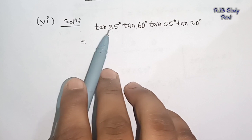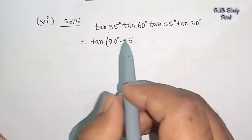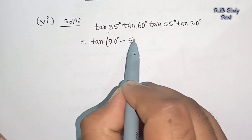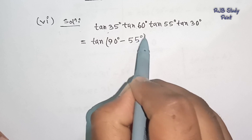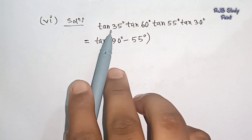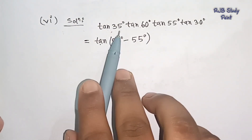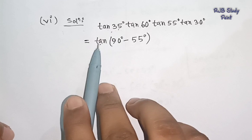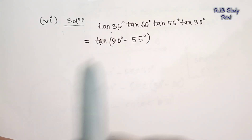So, cos 35 degree is the same. We use the identity: 90 degree minus A equals 55 degree. So when I write cos 35 degree, that is the same as 90 degree minus 55 degree, which gives 35 degree.